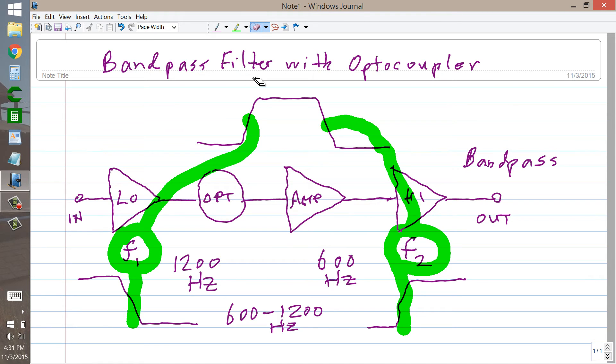F1 is the low pass cutoff frequency, that's the higher of the two, and F2 is the lower of the two. Now we've got it right.